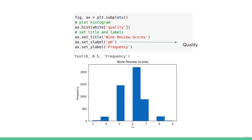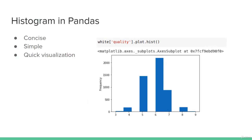After studying the histogram, the distribution appears normal because the maximum quality values lie between 6 and 7, forming a bell curve. The second most common value is 5, and there are no values between 4 and 5. We can then continue to visualize other features as well.